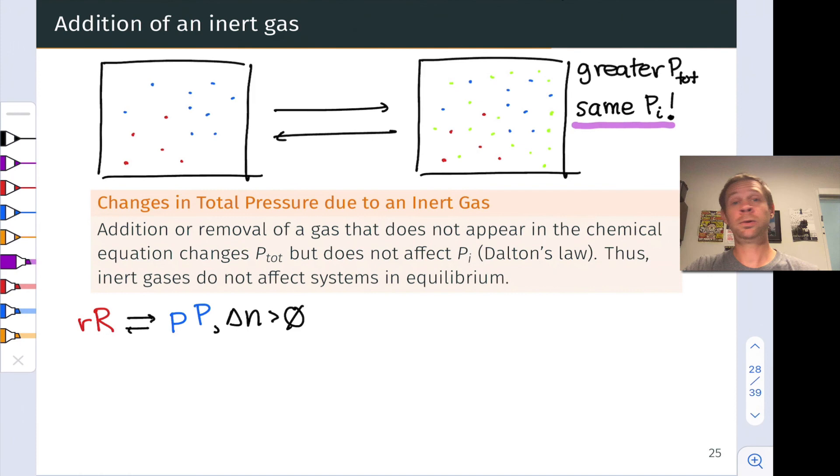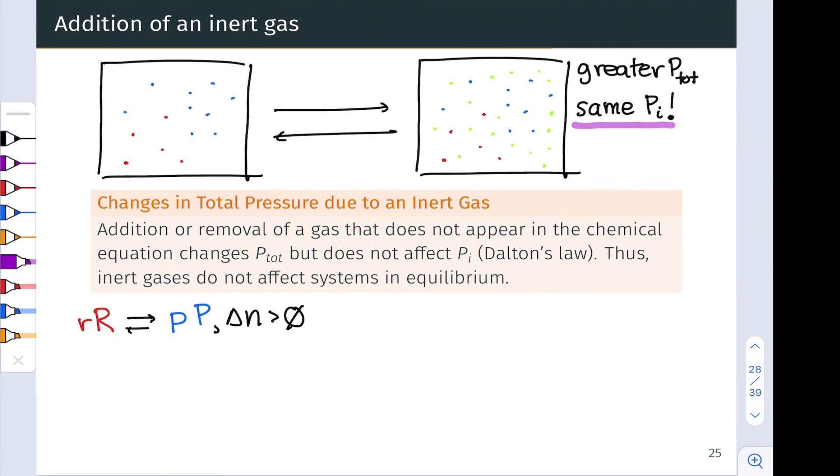For that reason, the value of Q is unaffected, and the system remains in equilibrium even though the total pressure has increased. This is key to keep in mind that it simplifies our life. It means that adding or removing some inert gas, for example air, adding or removing air will have no effect on the position of equilibrium of a chemical system that does not involve air as a reactant or product.